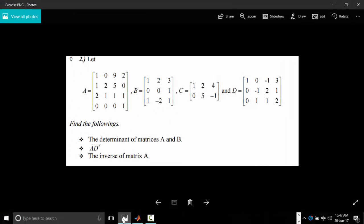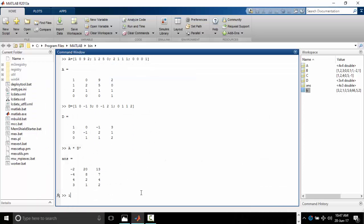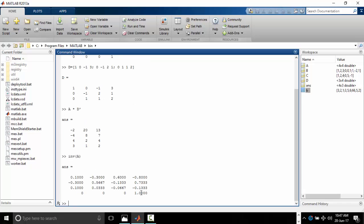So that is our answer. Then the last one is the inverse of Matrix A. Just type InV A. Enter. So this is the inverse of Matrix A.